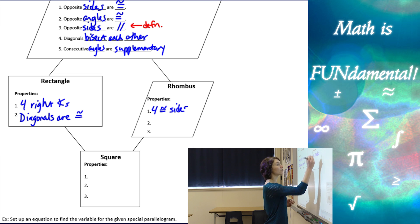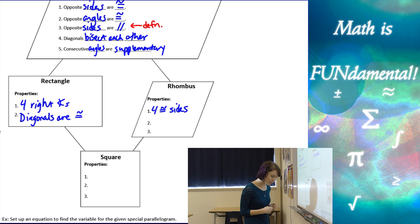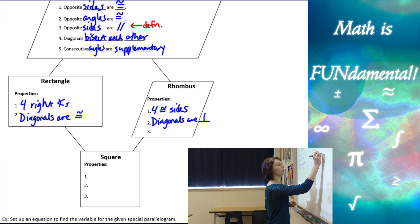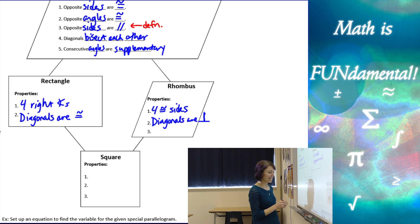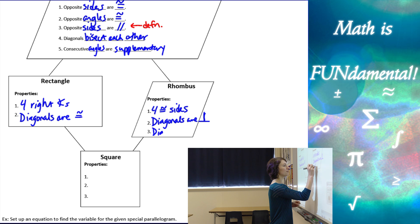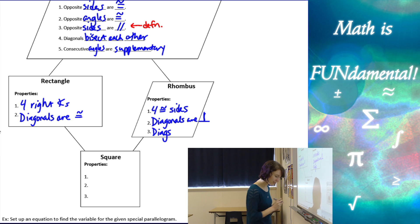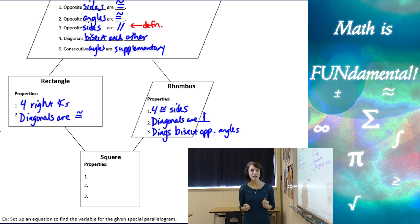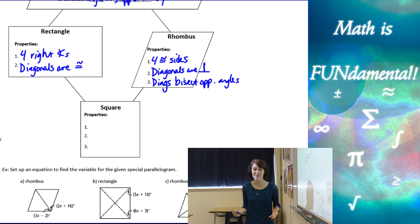Rhombuses are defined by four congruent sides, but there are two additional properties. First, the diagonals are perpendicular to each other. Second, the diagonals bisect the opposite angles. There's a lot of information about these shapes, so it may take some practice — maybe some flash cards — to really get used to these properties.